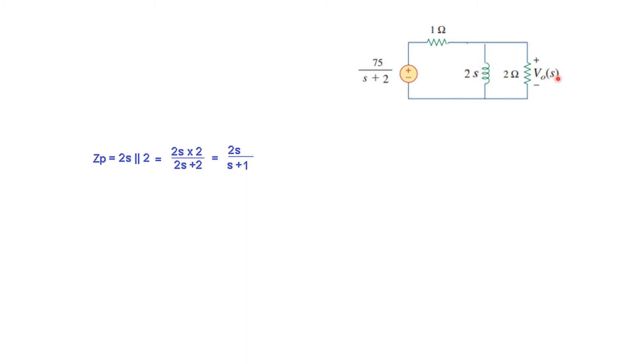the 2 in parallel. Let's call it ZP, Z parallel, which is 2S parallel to 2 and solving we get 2S divided by S plus 1. So our circuit will look like this and now we can easily do the voltage division rule to find VOS. I hope you know that the voltage in parallel remains same.